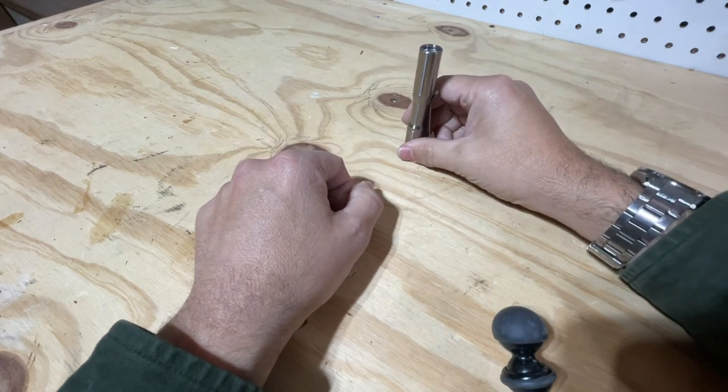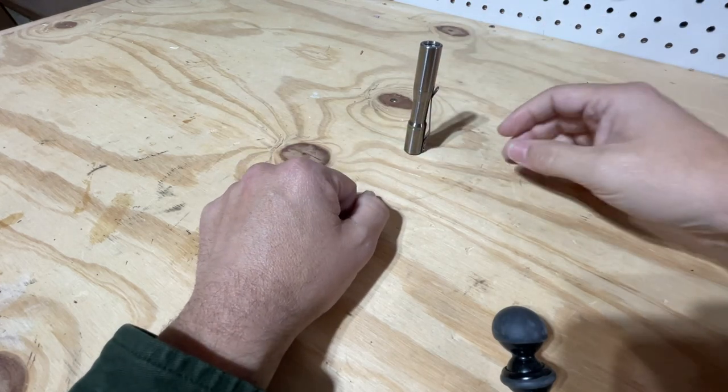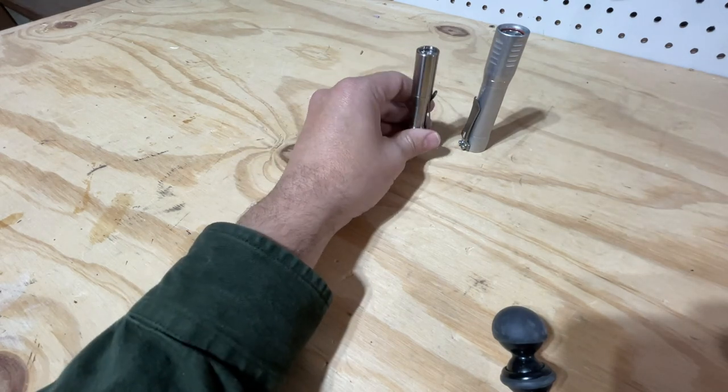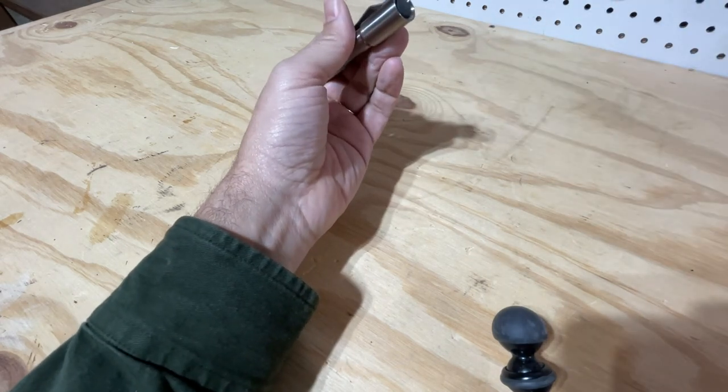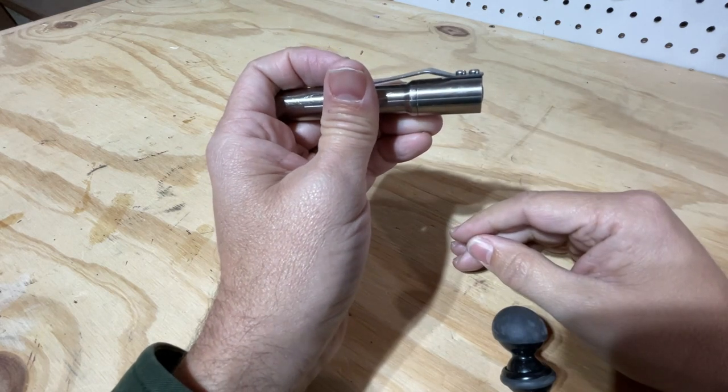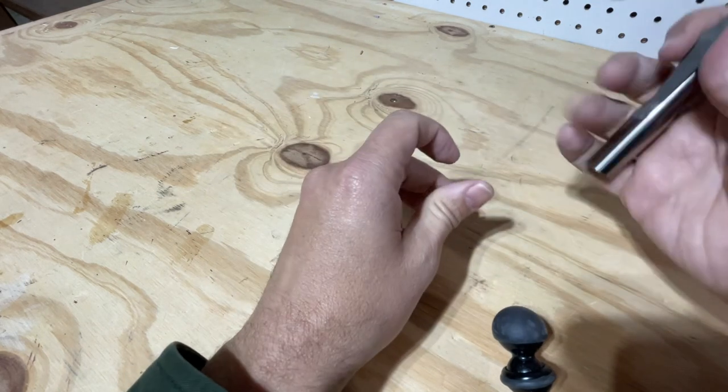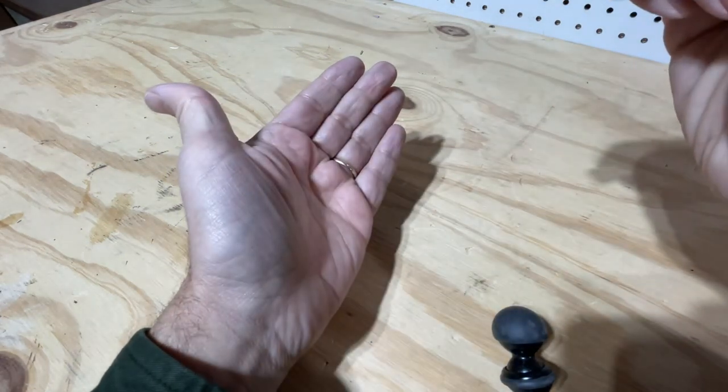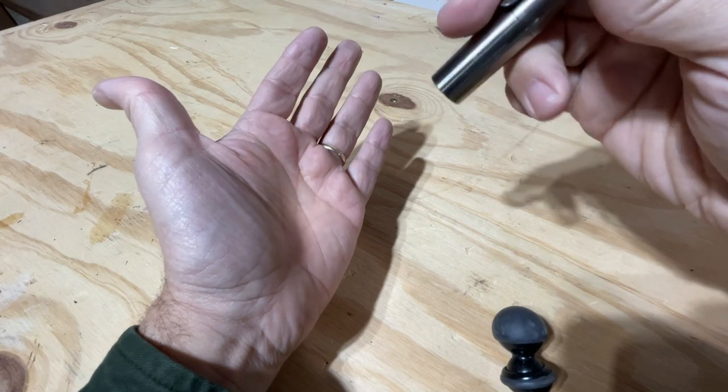One thing I wish it could do, I wish it was better at tailstanding. As you can see, it kind of leans to the side a little bit, and that's because the clicky protrudes ever so slightly. So you can see it there. It protrudes ever so slightly from the back of the body. Really great light.